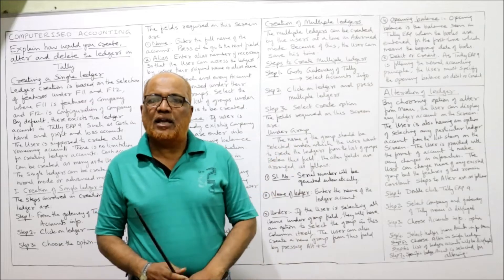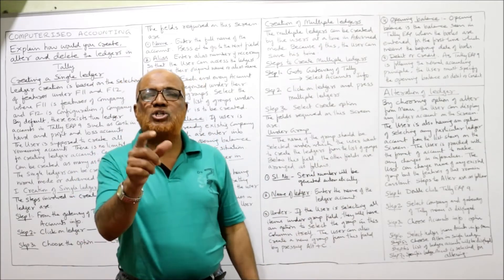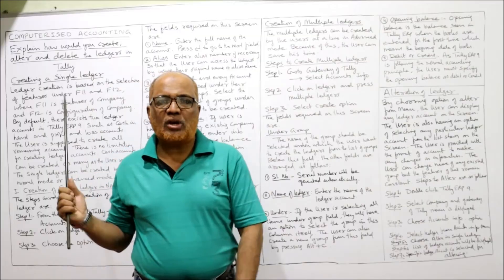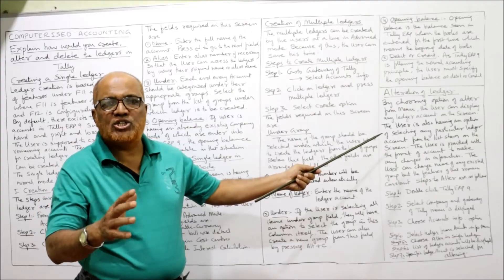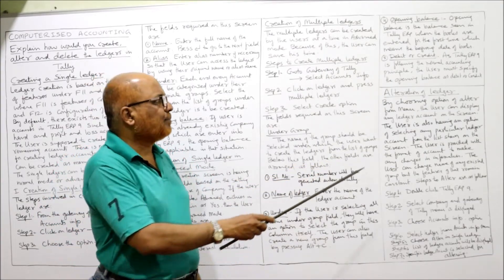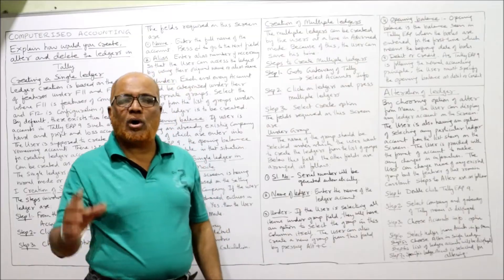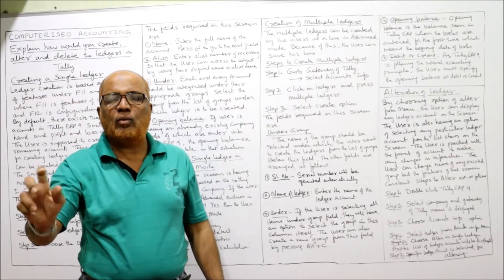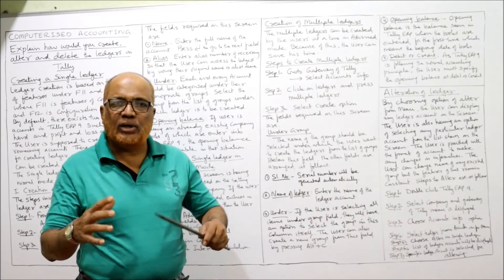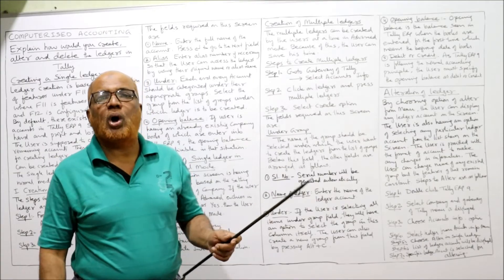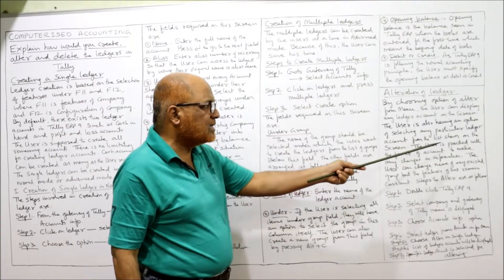Those are the steps required for creating a ledger account either in single ledger or multiple ledger, in normal mode as well as advanced mode. Now the next topic is alteration of ledger. We can make alterations in a ledger account. By choosing the Alter option from the menu, the user can display any ledger account on the screen and also alter the data.